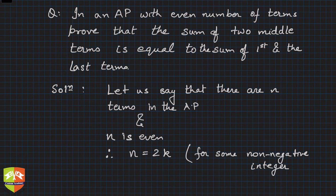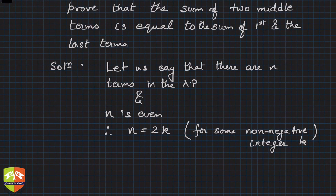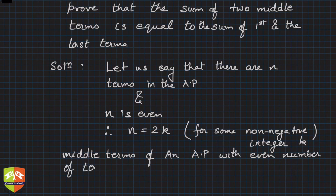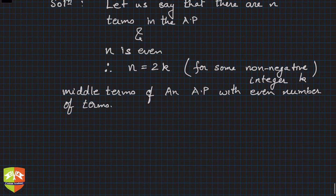Okay, so middle terms of an AP with even number of terms are given by t_{n/2} and t_{n/2 + 1}.